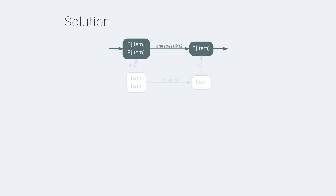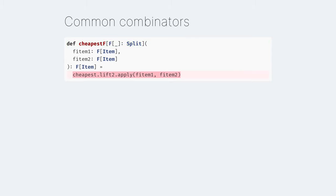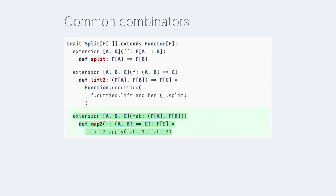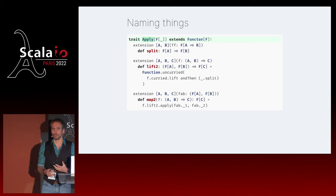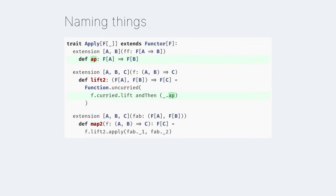Now we know how to lift functions of any arity, even truly unreasonable ones like 21 or even 22 - but no more, that would be crazy. We have lift2 concrete. The diagram commutes, and we can implement cheapest F by just following the arrows - just that. Again, as before, for that to work F must be a split. This works, but the code is again a bit weird - transforming a function. What we really want is map2, which makes us a lot more comfortable because it's a method call. Map2 is just another way of looking at lift2 - it's just a call to lift2.